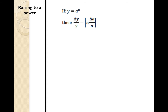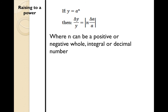When raising a measurement to a power — if your measurement is equal to a number raised to the n-th degree — your percentage uncertainty is going to be equivalent to that exponent multiplied by the percentage uncertainty, taking the absolute value. Remember, n can be a positive or negative whole number, or an integer or decimal number.